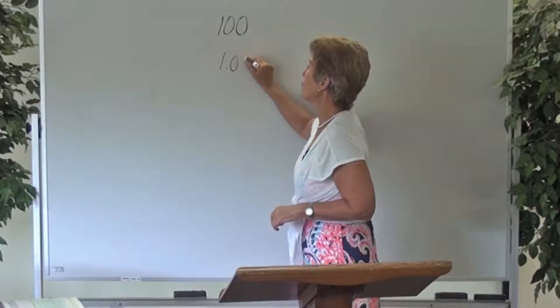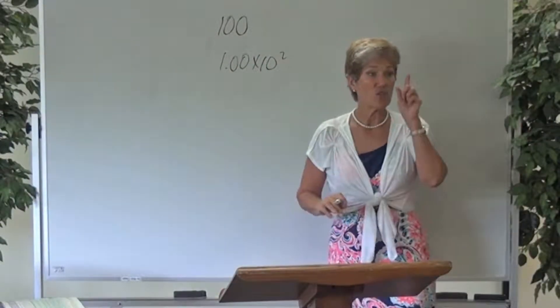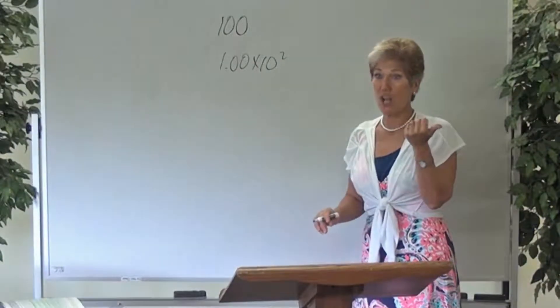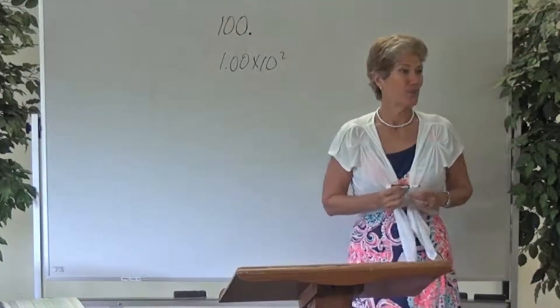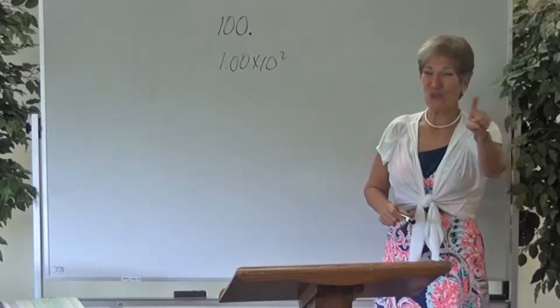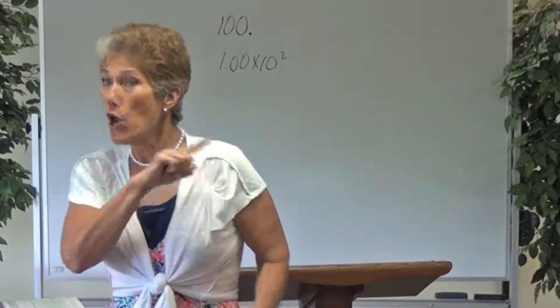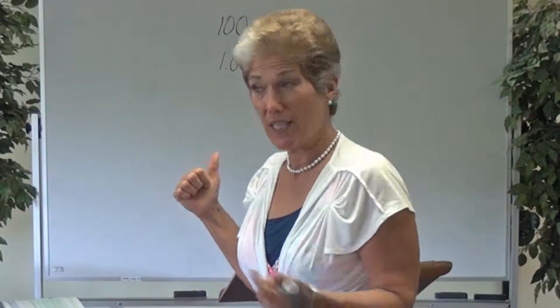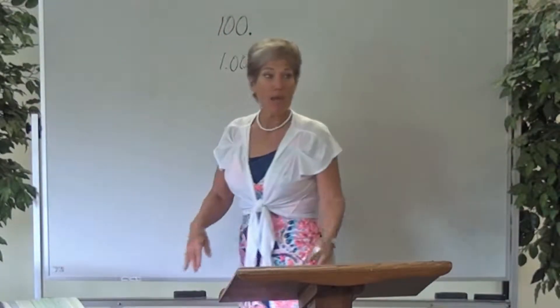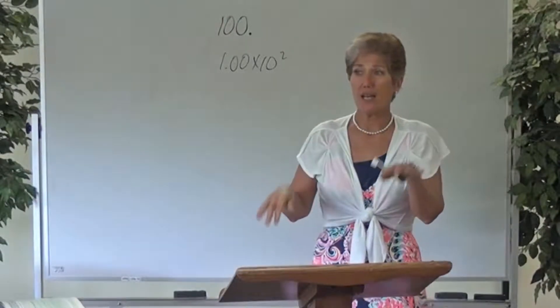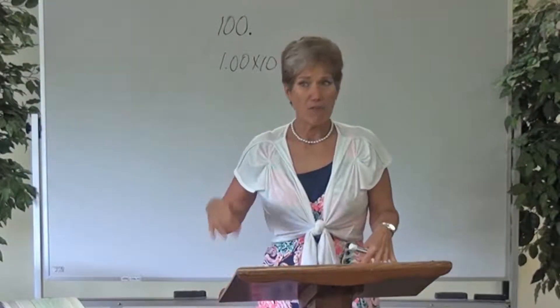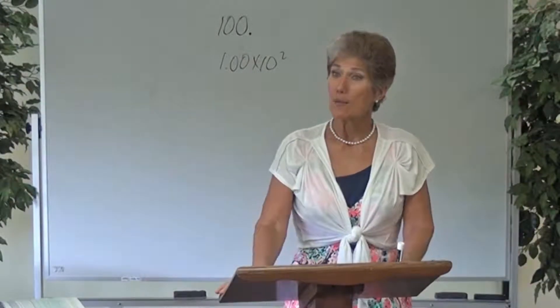The book will teach you to write it in scientific notation as three significant figures, but what colleges let you do now is put a decimal at the end — '100.' — and that shows it's three significant figures, because there's no other reason to put a decimal there. That's a shortcut I like. We're doing chemistry to prepare you for college, and if it helps you prepare for college, that's what I'm doing.